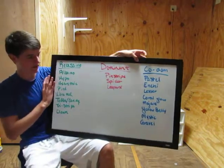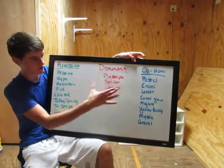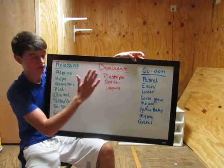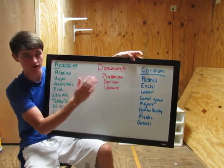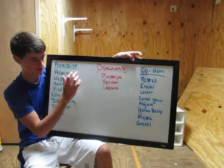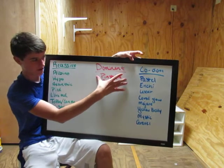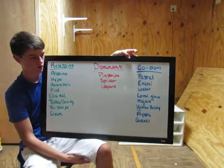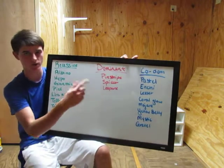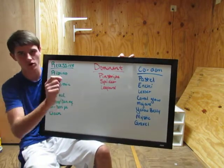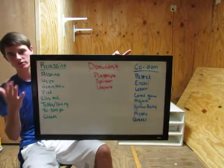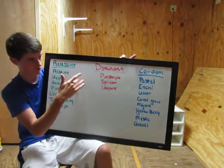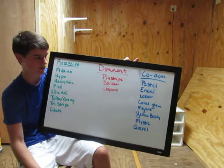If you bred an albino to a pinstripe, everything out of the clutch would be het albino because albino is recessive. You would get half pinstripe and half normal, all being het albinos. In the next video I'm going to draw out the Punnett squares and actually show the crossings. But right now this video is just to get a feel for what recessive, dominant, and codominant are.